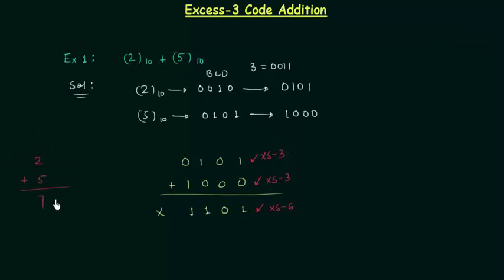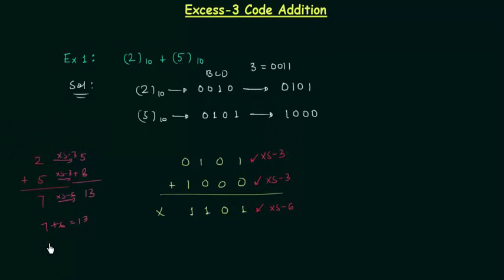And then I will perform the addition with XS3. 2 plus 3 is 5, 5 plus 3 is 8, 5 plus 8 is 13. Now you can see this is XS3 for 2 and this is XS3 for 8, but this is XS6 for 7, because 7 plus 6 is equal to 13. The answer should be 7 plus 3 equals 10. So what we can do? We can simply subtract 3 from the obtained result. This is the sum, and we will subtract 3 from it to obtain the correct answer.